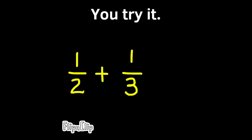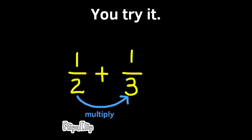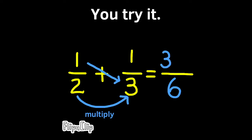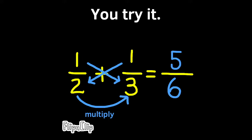Now it's your turn to try one: one-half plus one-third. Press pause and use the steps that I showed you. Let's see how you did. The first step was multiply the denominators — two times three is six. The second step is multiply the left numerator by the right denominator, and one times three is three. The third step is multiply the right numerator by the left denominator — one times two is two. And finally, three plus two is five, so the answer is five-sixths.